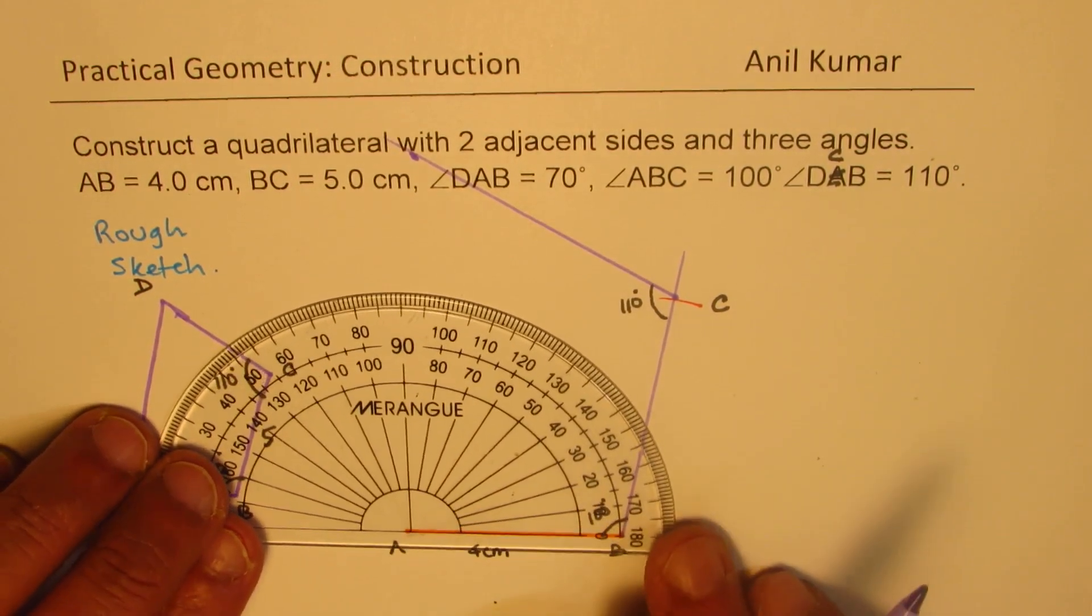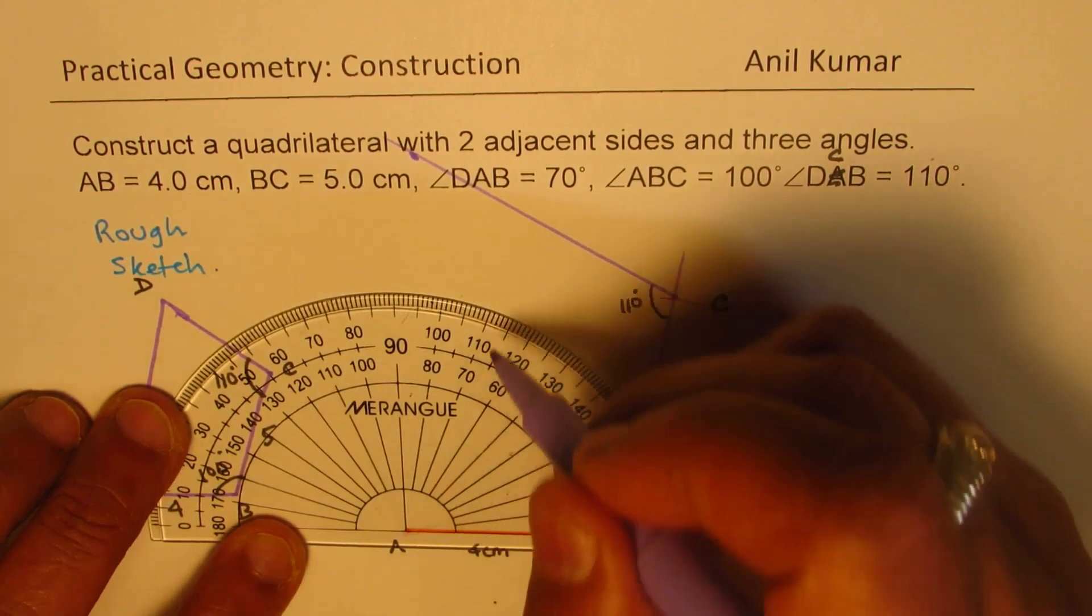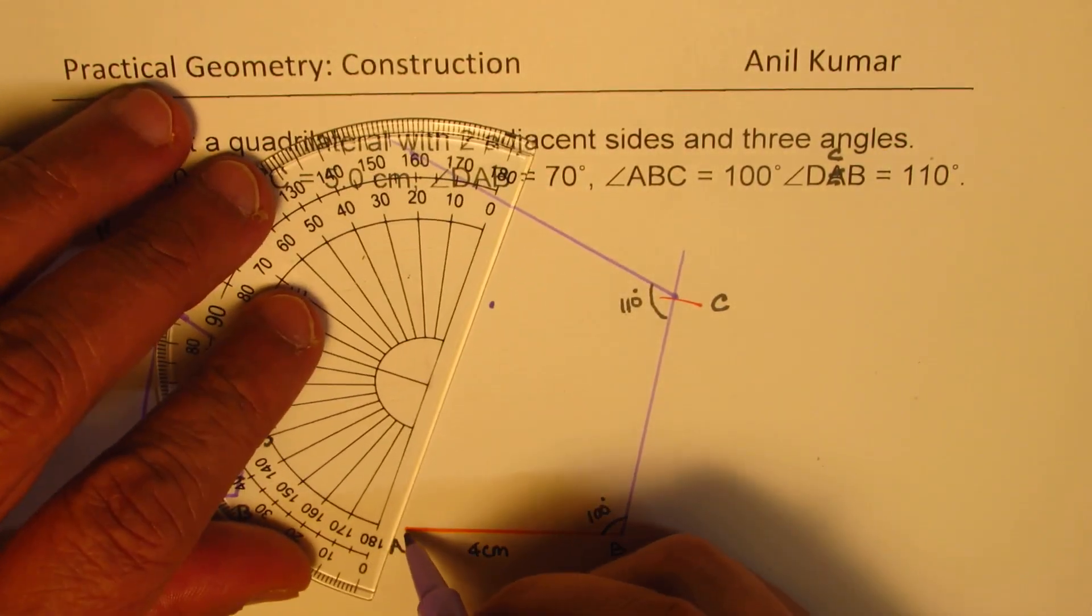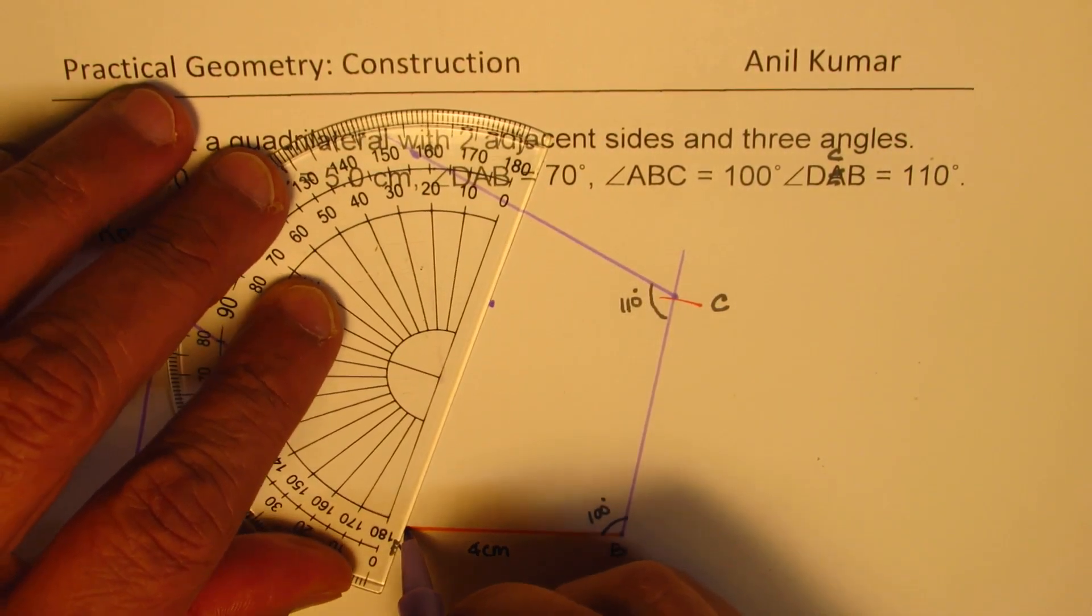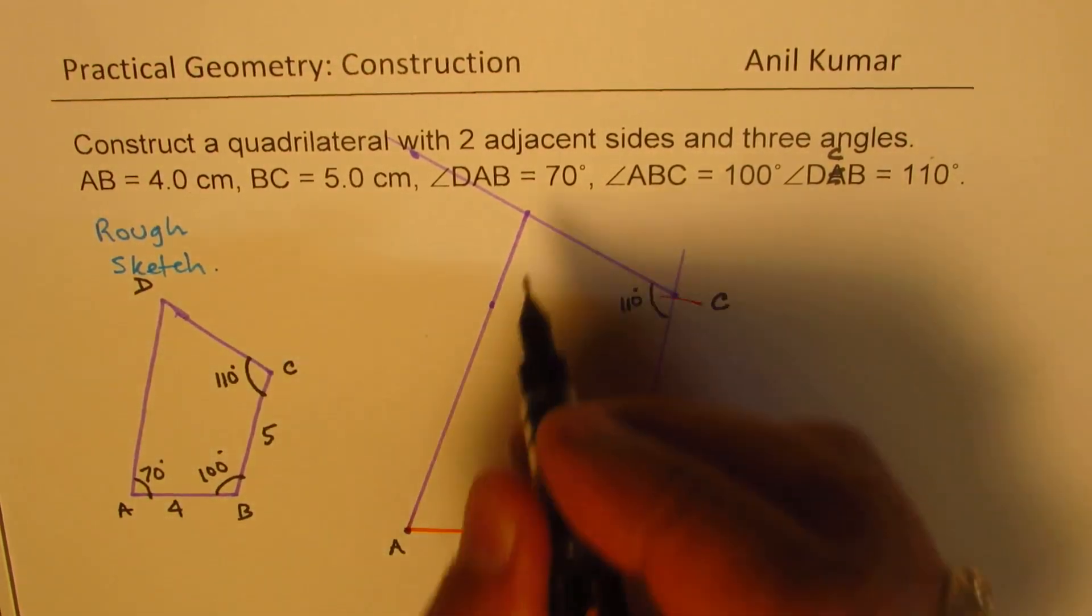So we'll construct 70 degrees from A, which is this point here. And it meets this line at D. So we get our point D there.